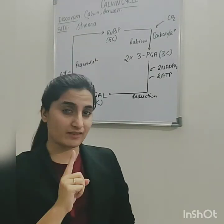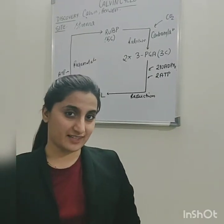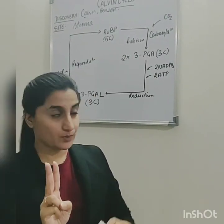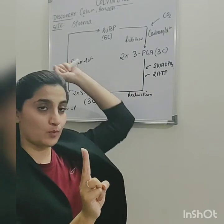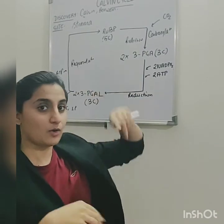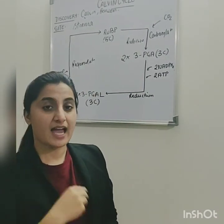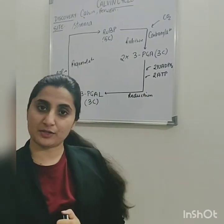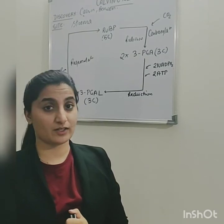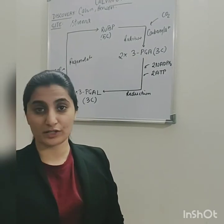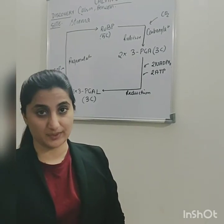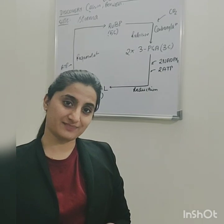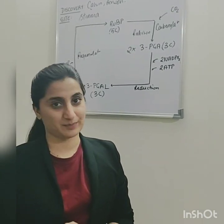All in all, in one round of the Calvin cycle, you utilize 2 ATPs plus 1 ATP — overall 3 ATPs. And you utilize 2 NADPH₂. In total, you get 1 molecule of glucose by running 6 rounds of the Calvin cycle. Thank you.